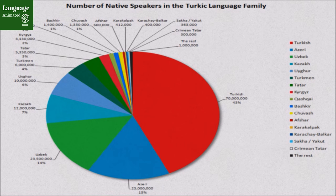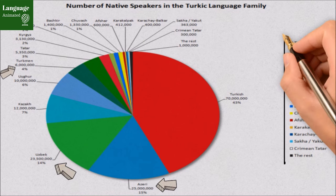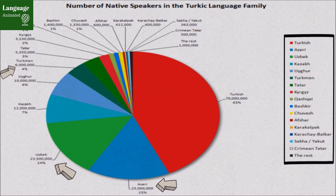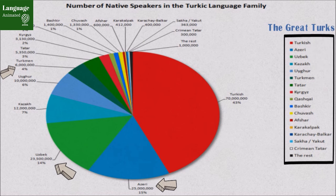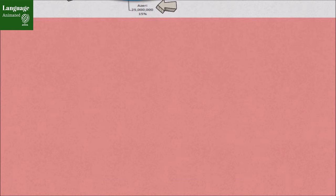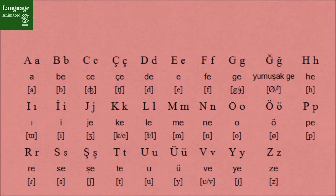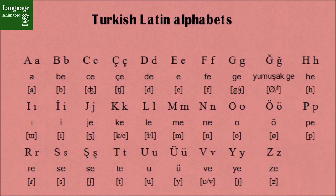Turkish is a Turkic language which has many similarities with other Turkic languages such as Azerbaijani, Turkmen, Uzbek, and others. These are all from one Turkic family which has different writing systems and grammar, but mostly they have many similarities — that's why they are very close to each other.